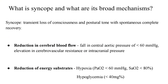First off, what is syncope and what are its broad mechanisms? It is defined as a transient loss of consciousness and postural tone with spontaneous complete recovery. There are two main mechanisms: number one is reduction in cerebral blood flow, and number two is reduction of energy substrates. The factors which contribute to a reduction in cerebral blood flow are either a fall in the central aortic pressure to less than 60 mmHg, or an elevation in the cerebrovascular resistance, or elevation in the intracranial pressures.